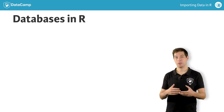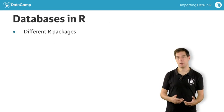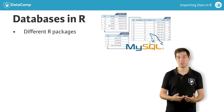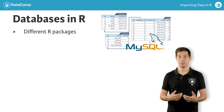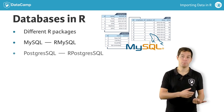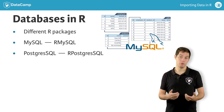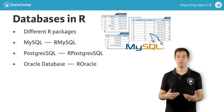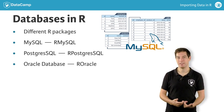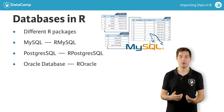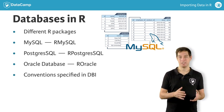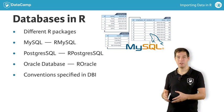Depending on the type of database you want to connect to, you'll have to use different packages in R. Suppose the Company database is a MySQL database — you'll need the RMySQL package. For PostgreSQL, you'll need RPostgreSQL. For Oracle, you'll use ROracle, and so on. How you interact with the database — which R functions you use to access and manipulate it — is specified in another R package called DBI. In more technical terms, DBI is an interface, and RMySQL is the implementation.